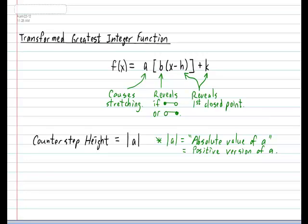Now let's take a look at what b does. b actually serves a very important function. Whereas a reveals the spacing in between each step, the variable b reveals how long each step is — and that is called the step length. So in your notebook, please put down: step length. The step length can be calculated by doing 1 divided by the absolute value of b. The absolute value of b will take whatever b is and use its positive version.